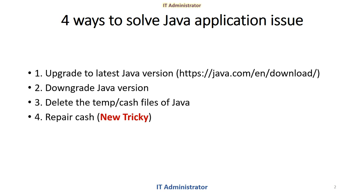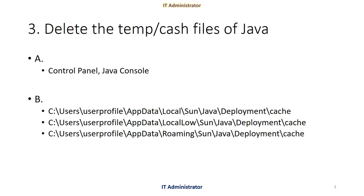I'm going to show you the third and fourth options, because all users know how to upgrade the Java version — install the latest version, restart the computer, or first uninstall the current version, restart, and install the latest version. The same applies for downgrading. But I'm going to show you the new method: deleting the temp cache files of Java. You can do it in two ways — via the Control Panel Java console.